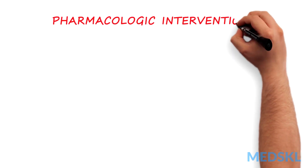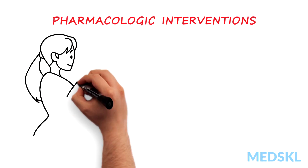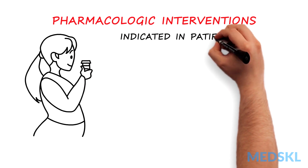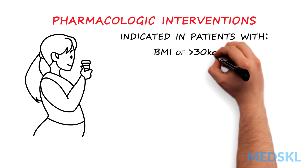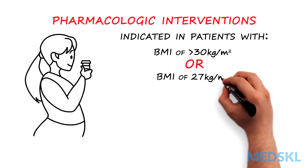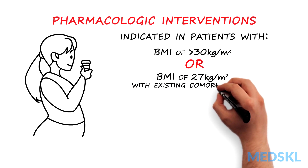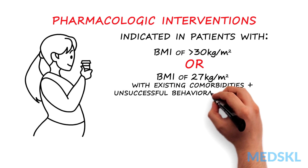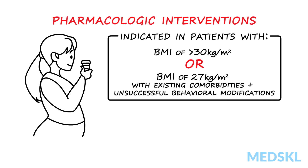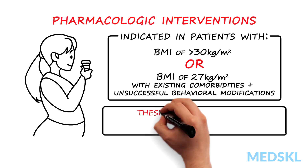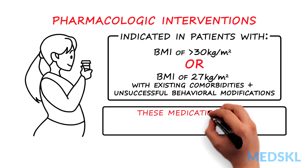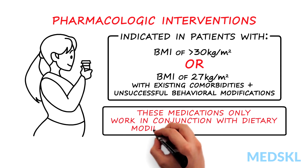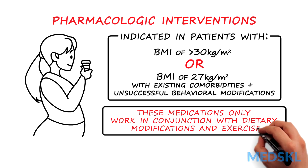Pharmacologic interventions are indicated in patients with a BMI of more than 30 kg/m², or with a BMI of 27 kg/m² with existing comorbidities, who have unsuccessfully tried to lose weight with behavioral modifications. It is important to realize that these medications don't lead to drastic weight loss and only work in conjunction with dietary modifications and exercise.